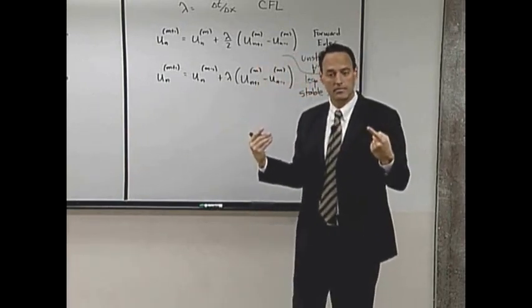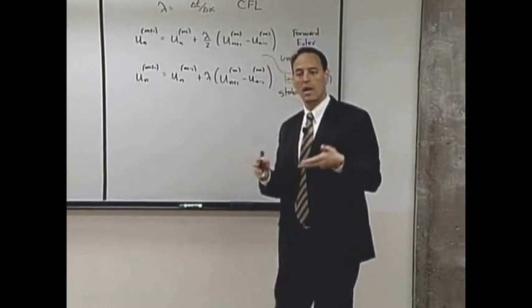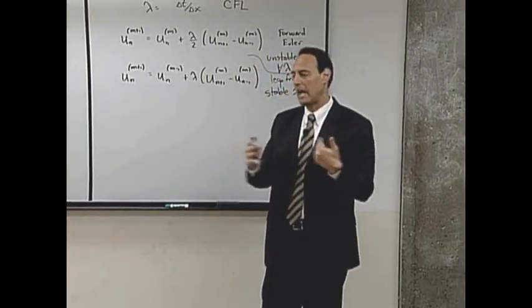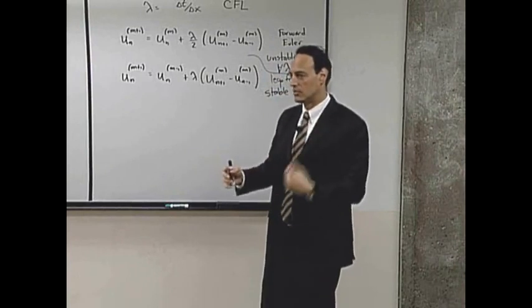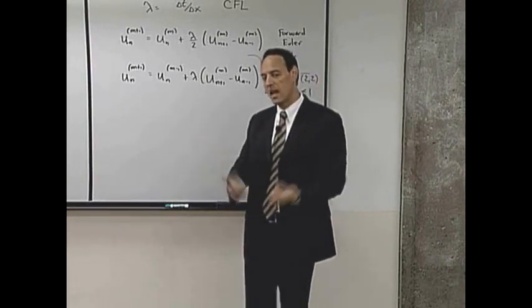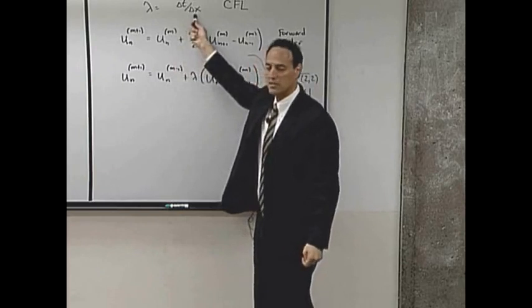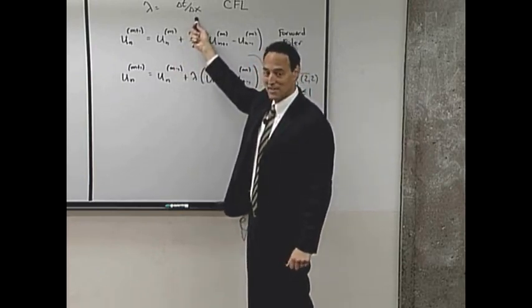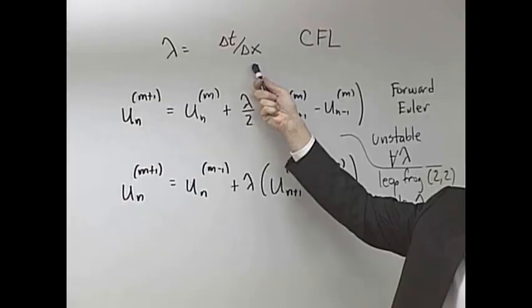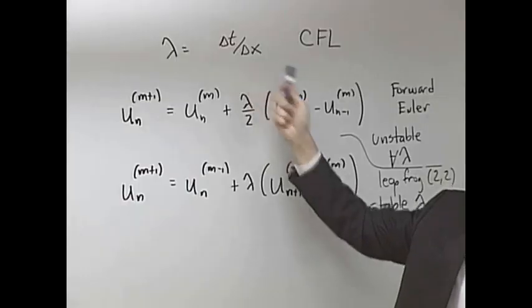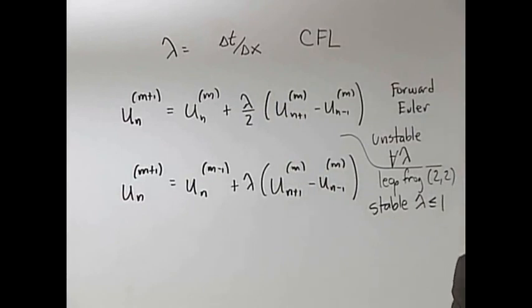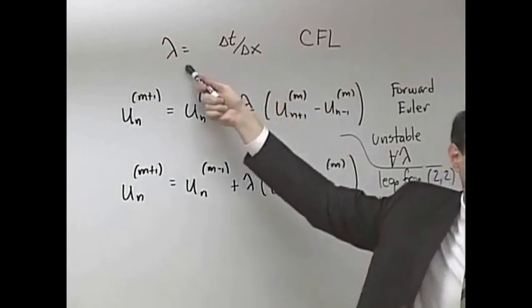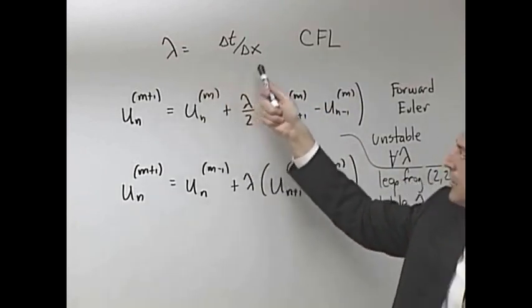So you can pick delta x and delta t how you wish. However, suppose I'm running this thing along and you know what, I want a little bit more spatial accuracy, so I'm going to cut my delta x in half. What did that just do to my lambda? Made it twice as big.